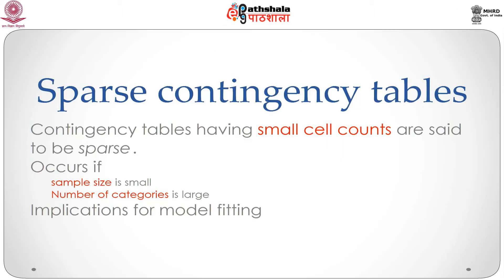A sparse contingency table occurs when some of the cell counts are small. Small cell counts can occur in two situations: firstly, if the sample size itself is small; and secondly, if the sample size is large but the number of categories is also large. Sparseness in contingency tables has an implication for model fitting, which we shall explore in the remainder of this module.